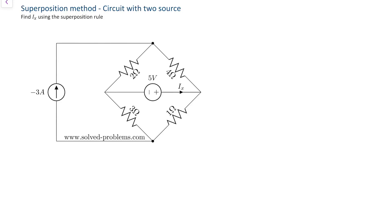We'll see how to make independent sources zero — turn them off. Let's start with the current source. To turn the current source off, we need to replace it with an open circuit. Making a current source zero means there shouldn't be any current passing through that source — the current is zero. An open circuit achieves this. So first we make the current source zero and find IX1, the contribution of the 5-volt voltage source on IX.